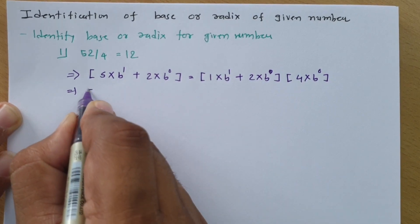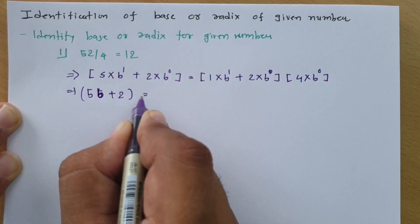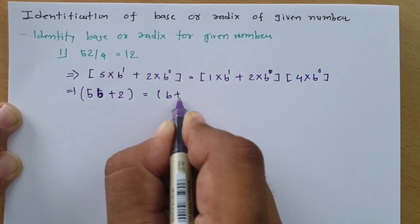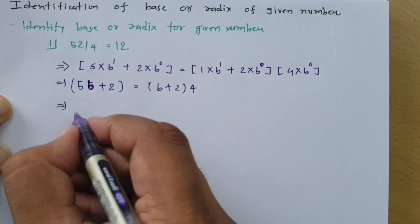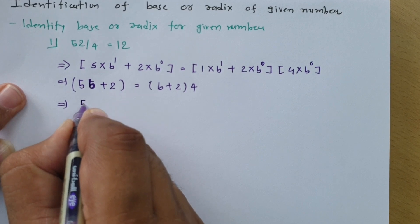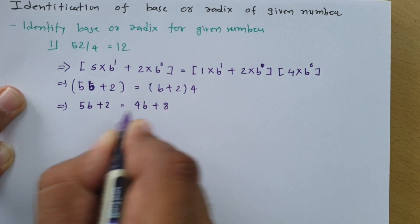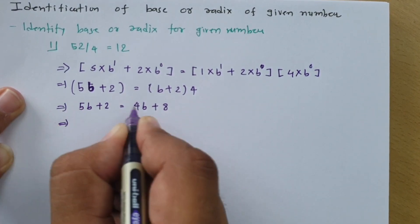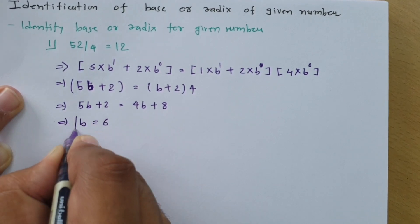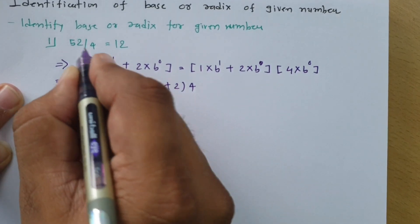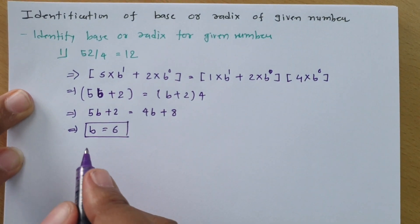Expanding: 5B + 2 = (B + 2) × 4, which gives 5B + 2 = 4B + 8. Solving this, B = 6. So the equation 52 ÷ 4 = 12 is valid in the base 6 number system.